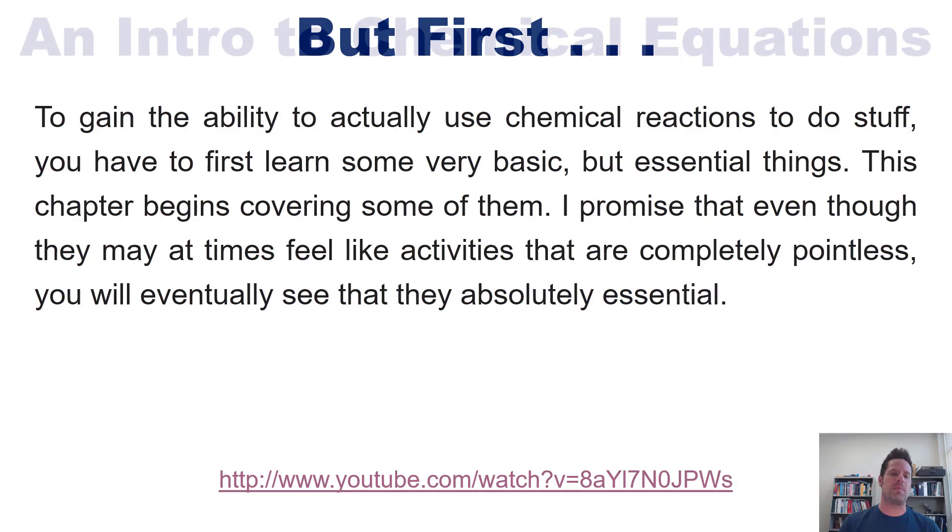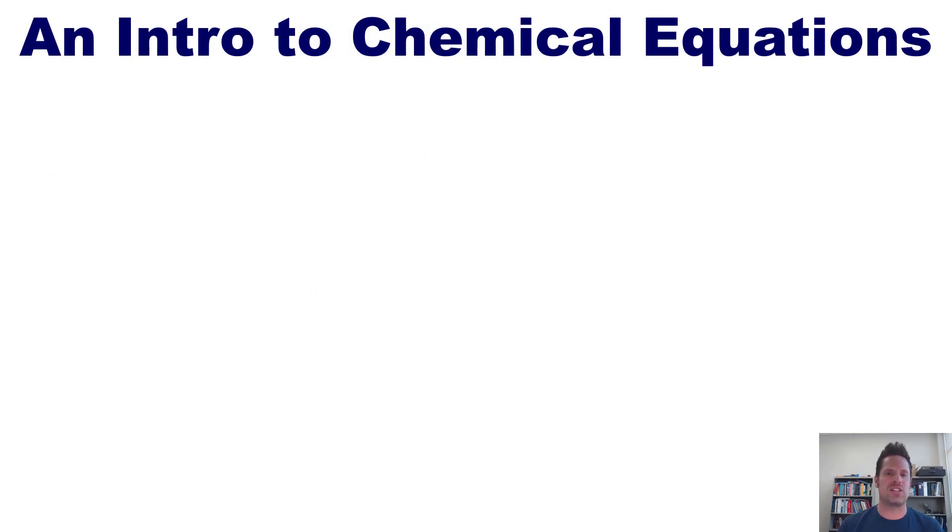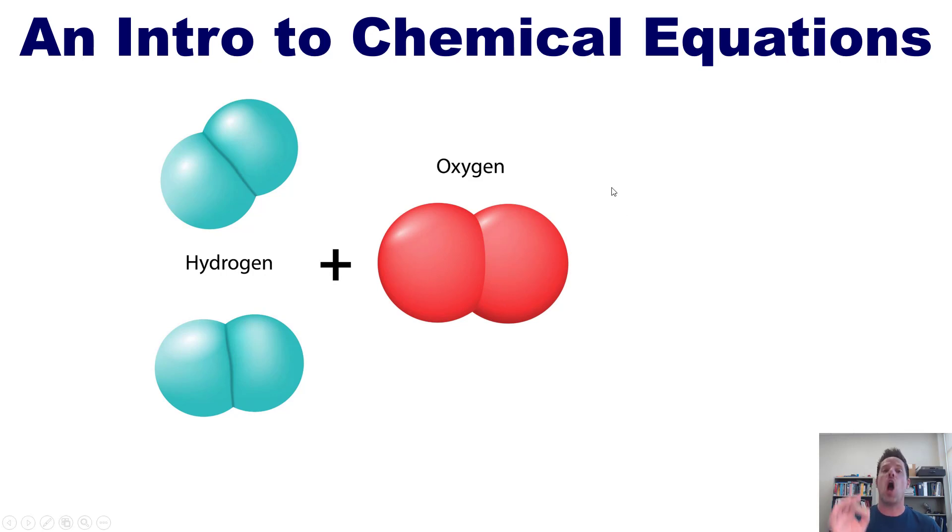All right, so we begin with an intro to chemical equations with a beautiful example. You can take two hydrogen molecules. Now remember, each hydrogen molecule contains two hydrogen atoms within it represented by these turquoise colored spheres. So again, each hydrogen molecule has a formula of H2 with two hydrogen atoms within it. So these are two separate molecules each of which have two hydrogen atoms inside them. We can combine these with one molecule of oxygen whose formula is O2.